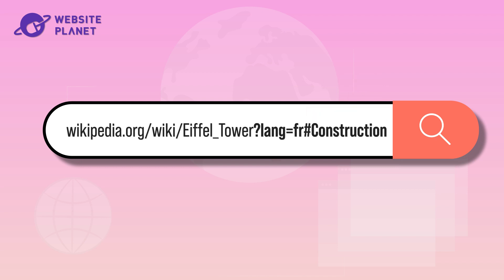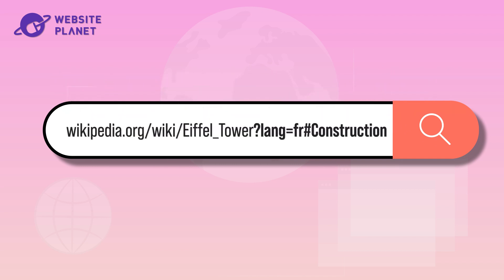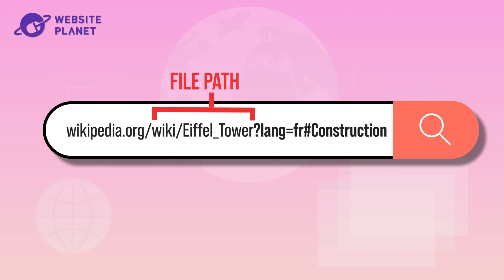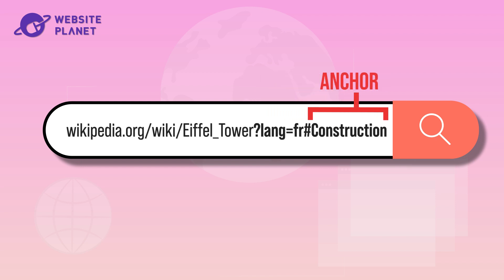So let's dissect a URL, shall we? Take this one. The domain name tells us we're on a Wikipedia page, and the file path indicates that it is about the Eiffel Tower. The parameter indicates that the language for the page should be French, and the anchor takes you directly to the section about the construction of the Eiffel Tower.